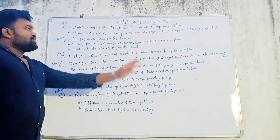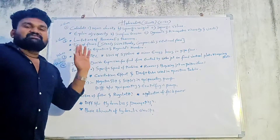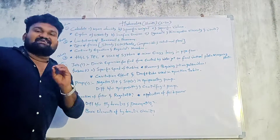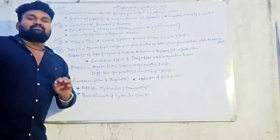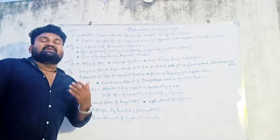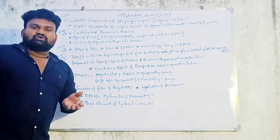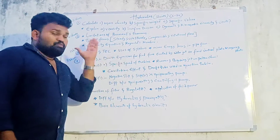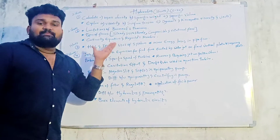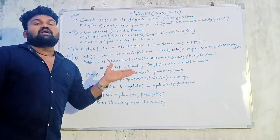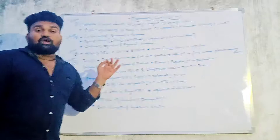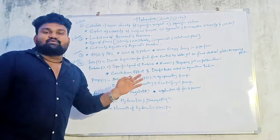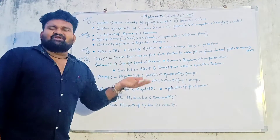So, if you complete these questions, you have 10 questions across 30 marks. You can pass easily. These are the most important repeated questions in hydraulics according to the C20 curriculum.